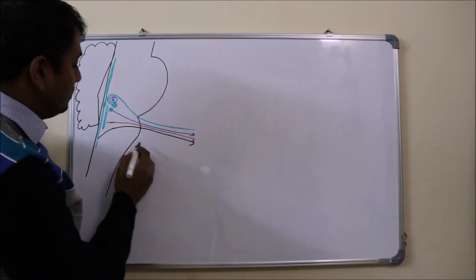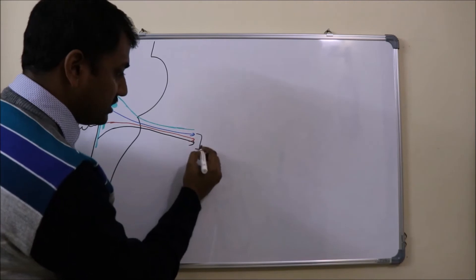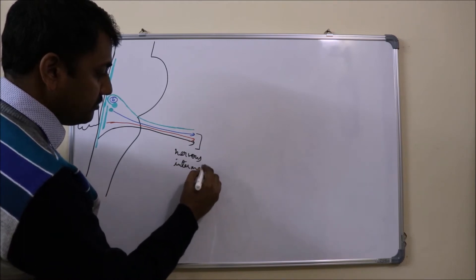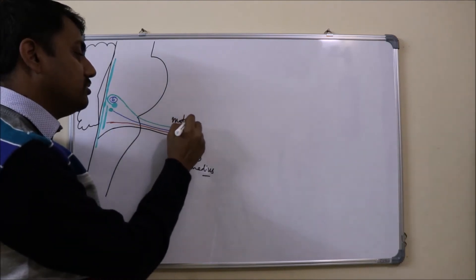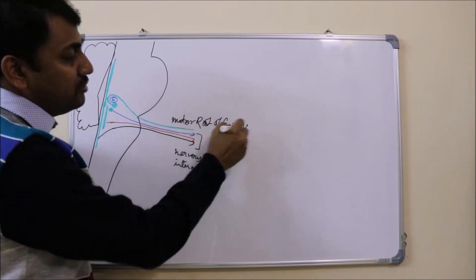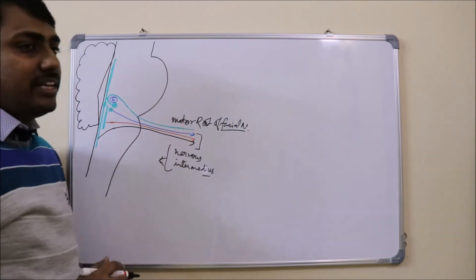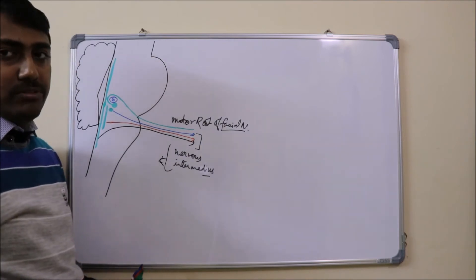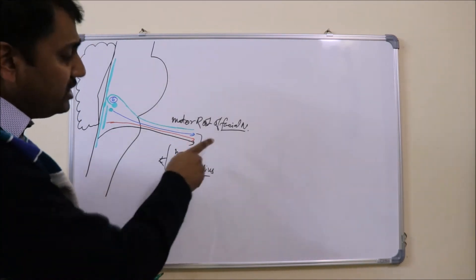Together, the parasympathetic motor fibers, the fibers of taste sensation, and the fibers of pain and touch sensation from the external ear comprise what is known as the nervus intermedius, while the branchiomotor fibers comprise the motor root of the facial nerve. Calling nervus intermedius the 'sensory root' is a misnomer, since it also carries parasympathetic motor fibers.